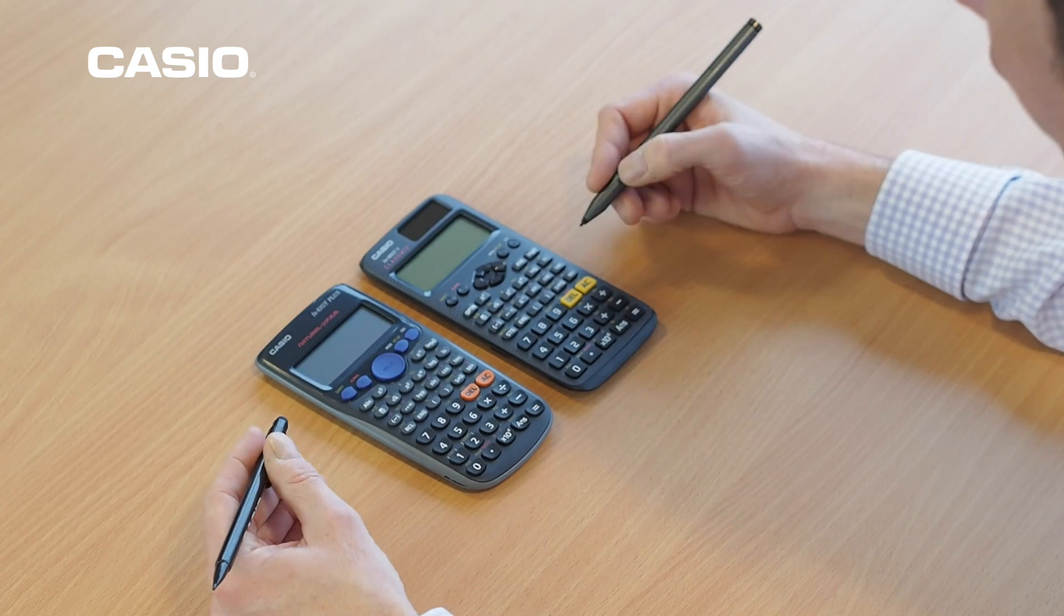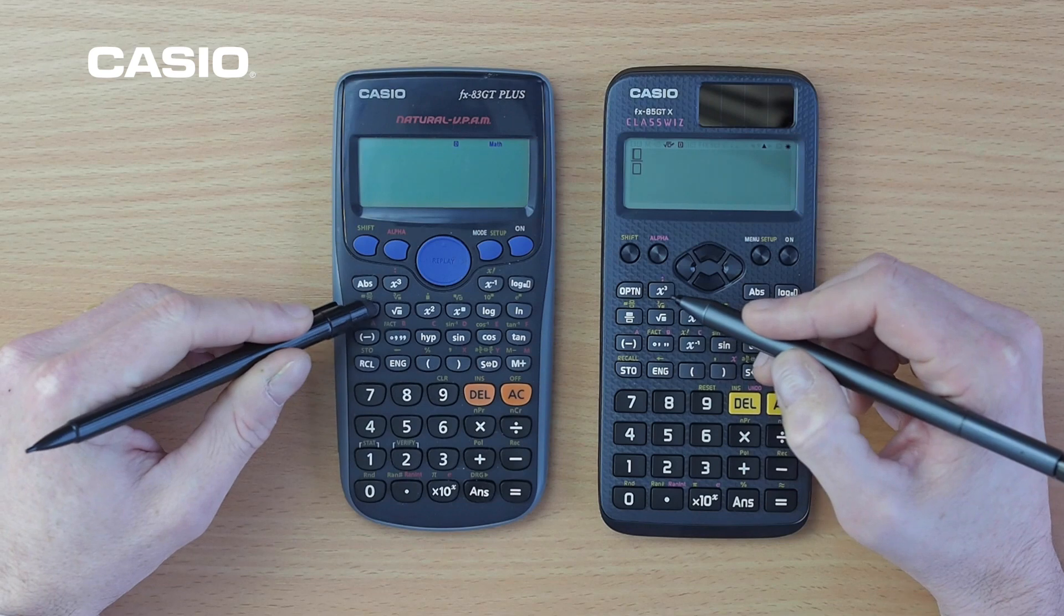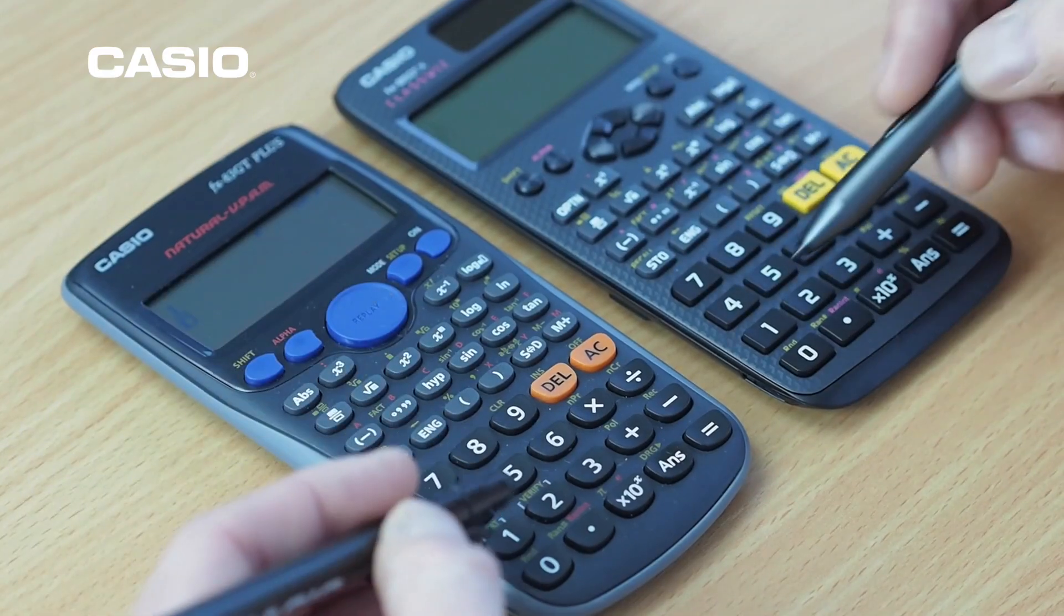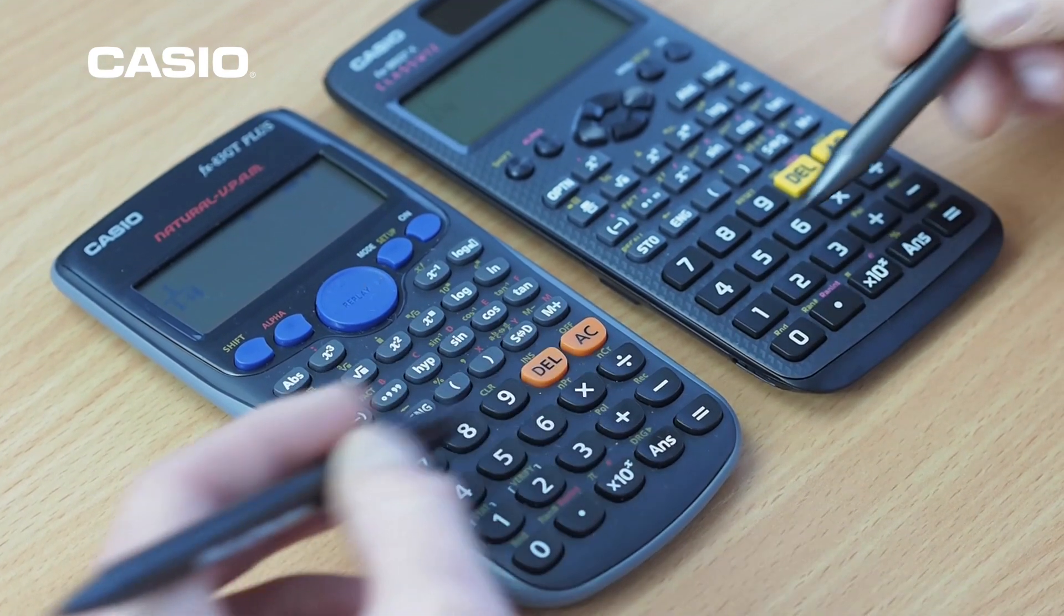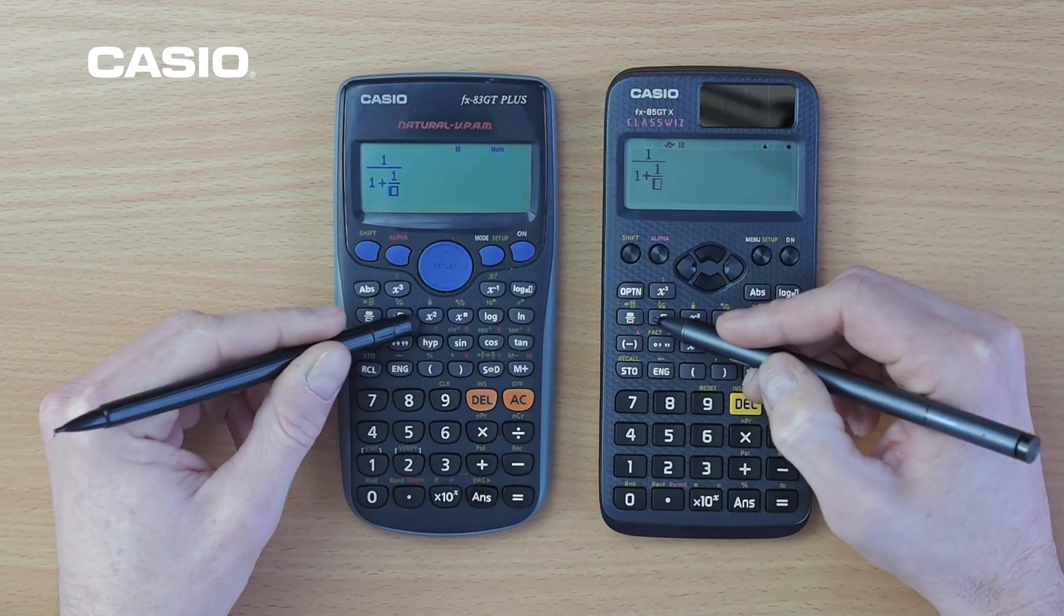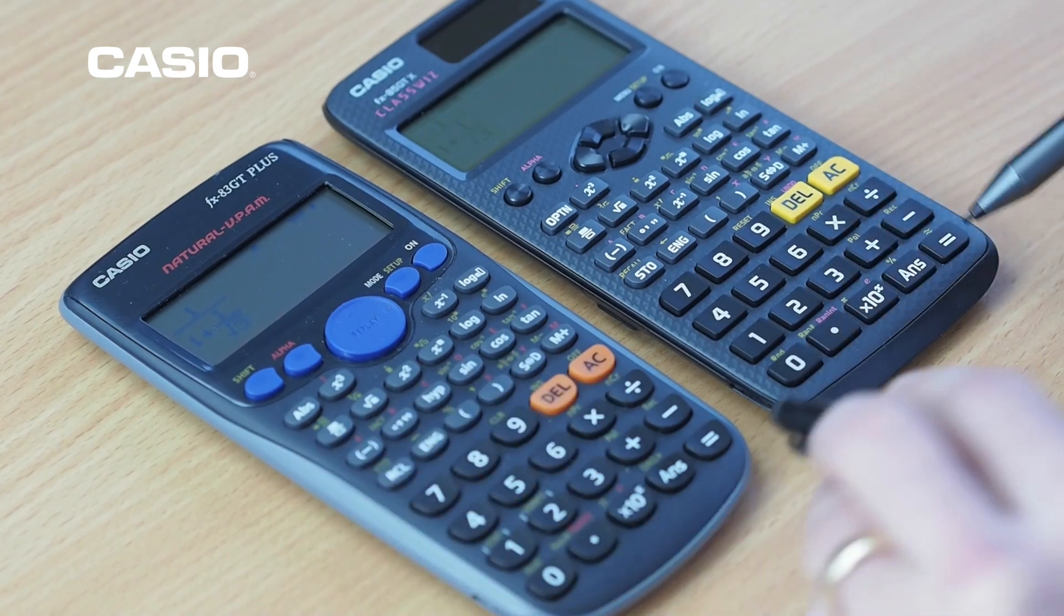Just to demonstrate that things really are the same, what we'll do is we'll set up a fraction. So we'll have one over one plus, and we'll set up another fraction. So one over square root, and we'll have three. And we'll press equals.